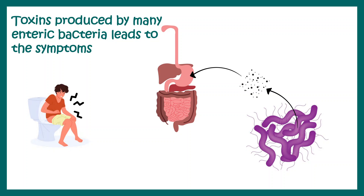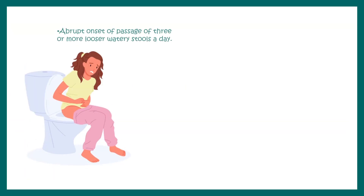Toxins produced by many of these bacteria lead to the symptoms of traveler's diarrhea. Signs and symptoms include an abrupt onset of loose, watery stool — at least three or more times per day. Abdominal cramps, nausea, and vomiting are also pretty common.